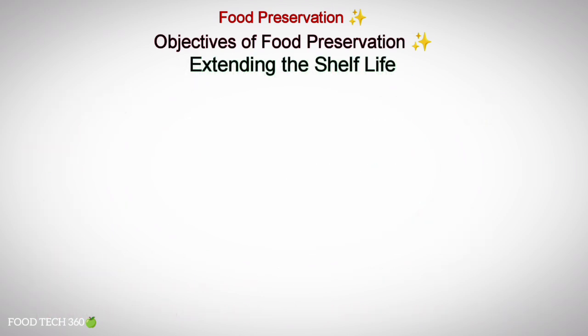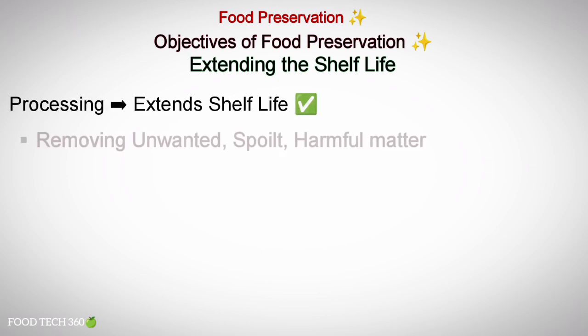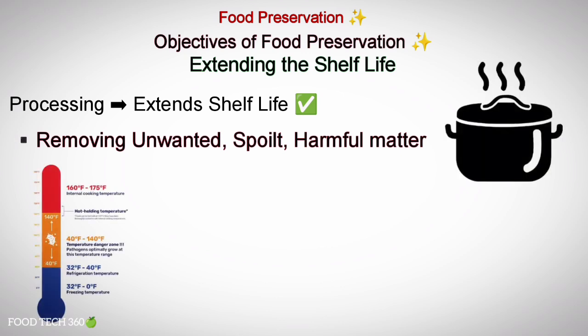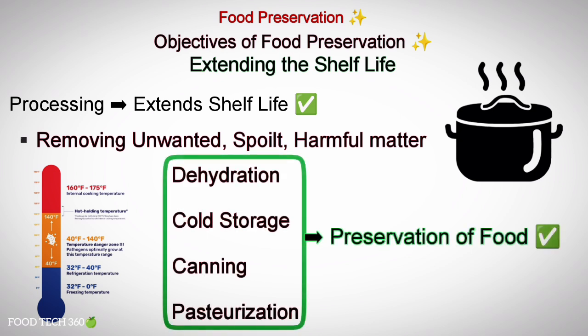One of the important objectives is extending the shelf life. Processing extends the shelf life because, apart from removing unwanted, spoiled and harmful matter and subjecting the food to temperatures outside the danger zone, all processes such as dehydration, cold storage, canning and pasteurization are aimed at preservation of food.